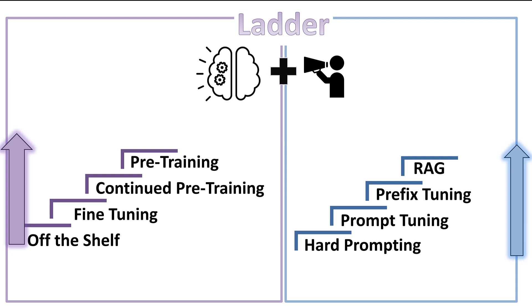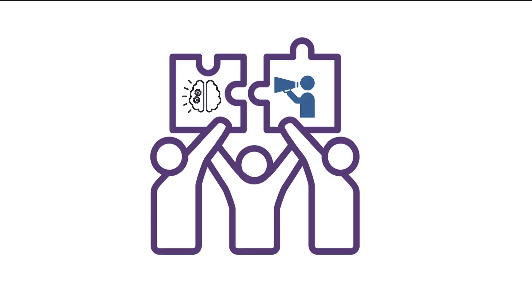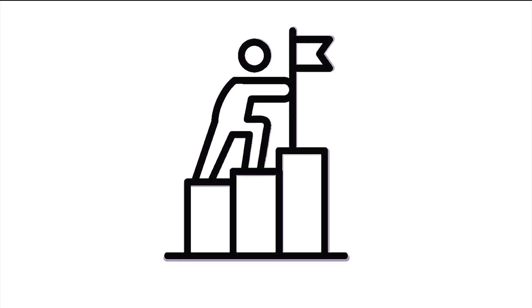The same applies to interaction: just start with hard prompting, go to prompt tuning, prefix tuning, and finally to RAG or combine a few of these. It really depends on your use case and what is your goal.